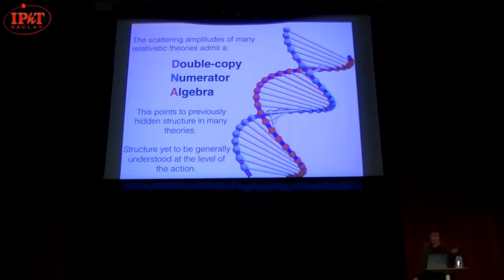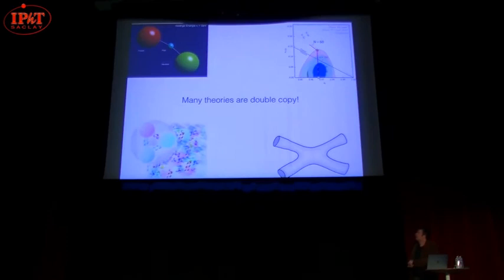Or to go for a different metaphor, scattering amplitudes of many relativistic theories have a double-copy structure with numerator algebra. And this ends up weaving a web between what would be apparently very disparate theories. And I should point out that this has structure that has yet to be generally understood at the level of the action. So for very simple cases like self-dual Yang-Mills, and actually recently for the nonlinear sigma model, we've got actions that make this manifest. We've got the right gauge choices and auxiliary fields that make this manifest at the level of the action. But we don't have this everywhere yet.